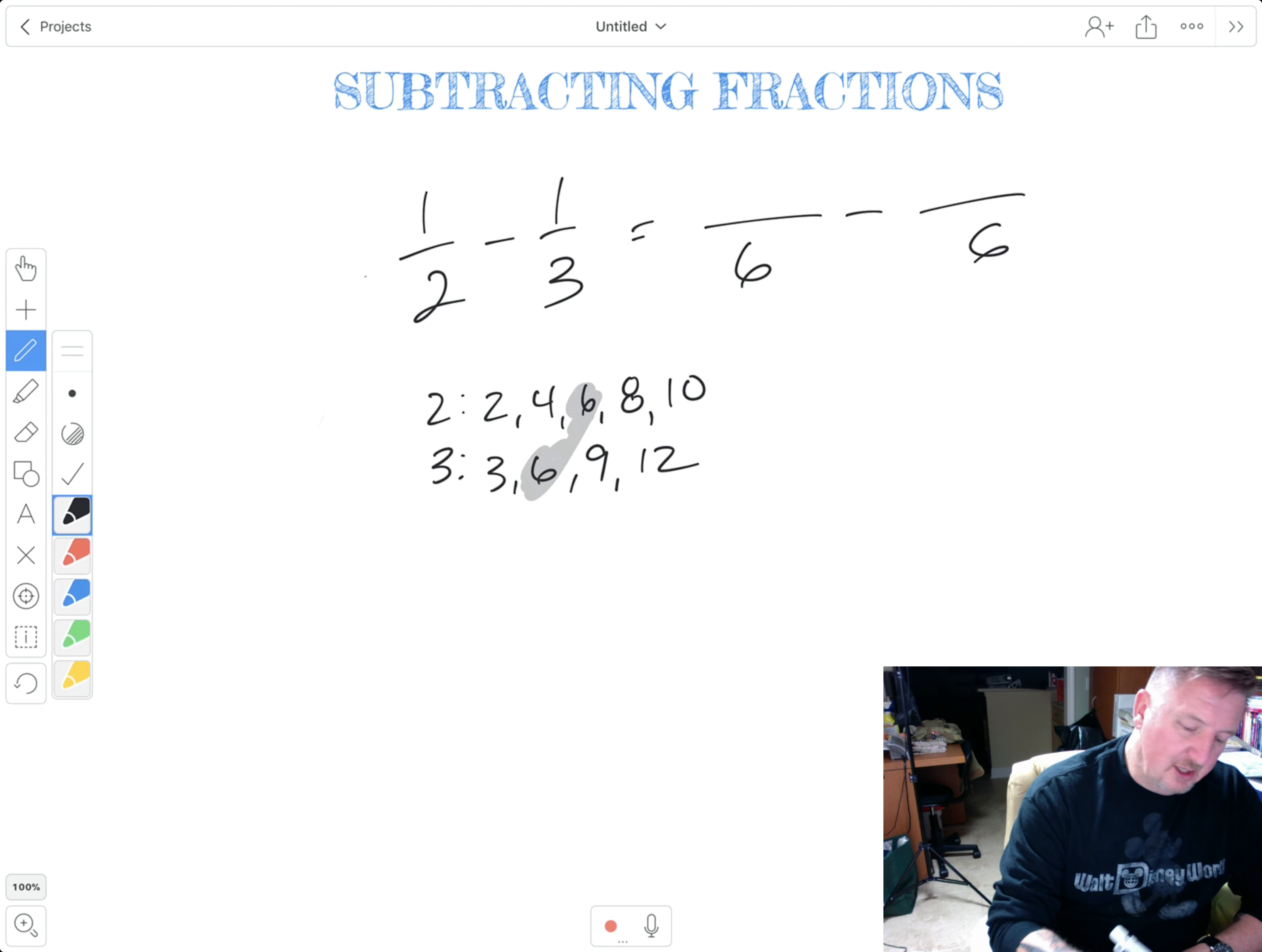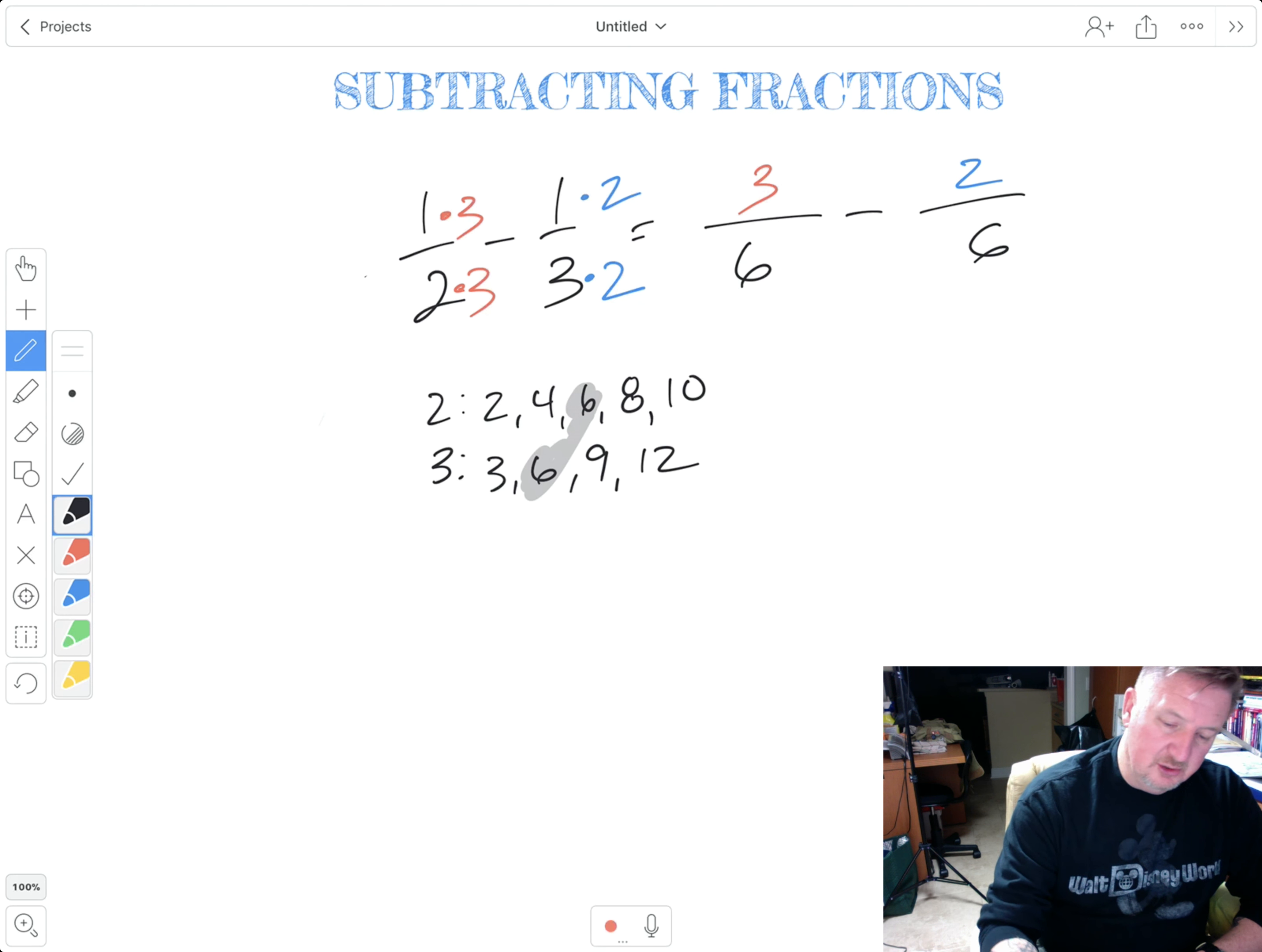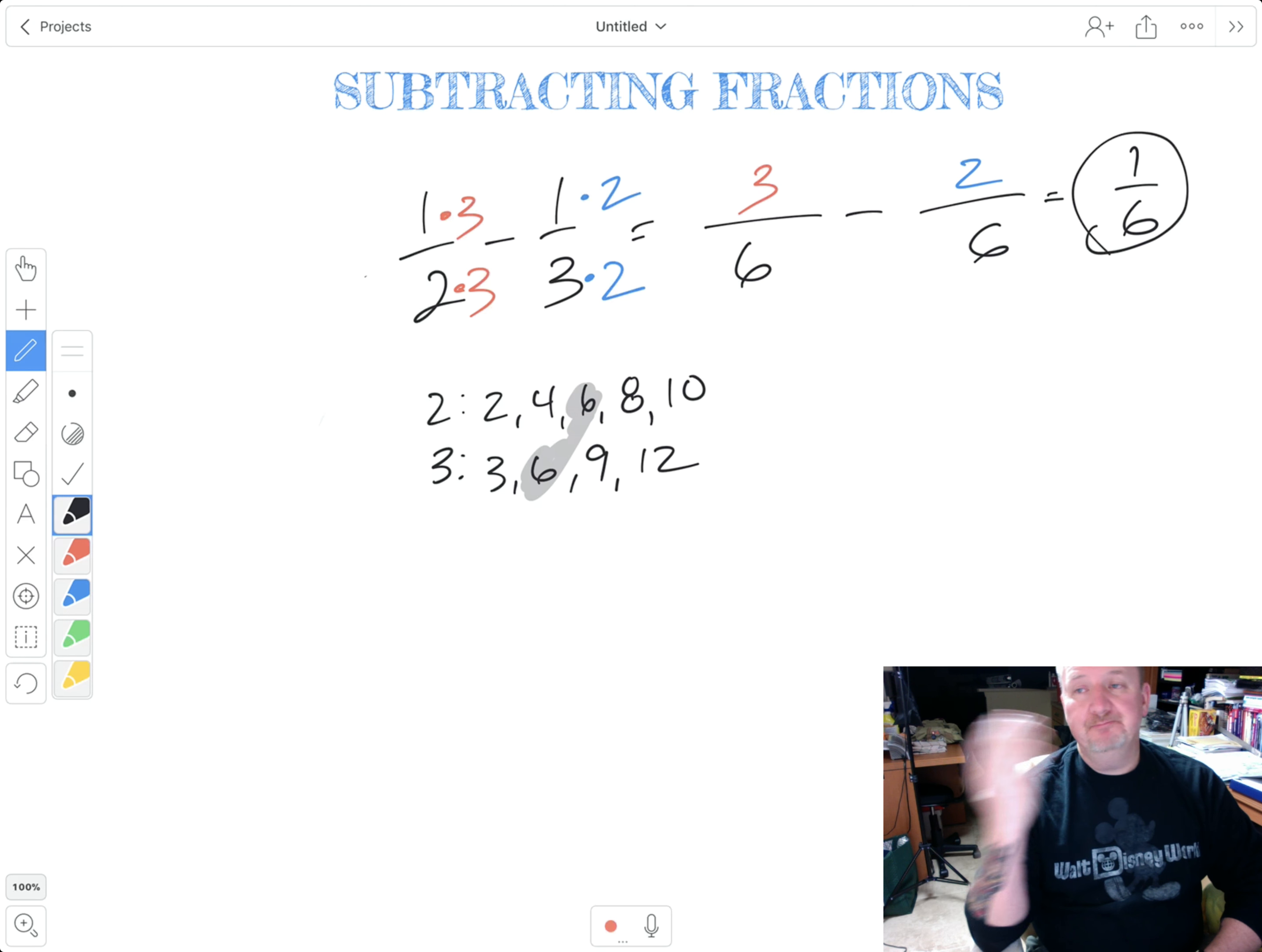Six and six. So what did I multiply two by to get six? I multiplied by three. So that means I got to multiply the top number by three. Three times one is three. I multiplied the bottom number times two here. So I got to multiply the top times two. One times two is two. I could subtract two from three much easier than subtracting one from one. So anyway, two from three is one and my denominator stays the same.